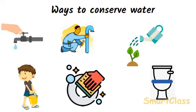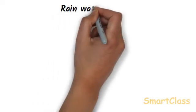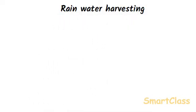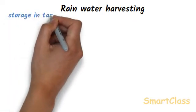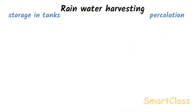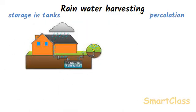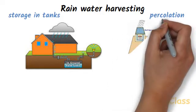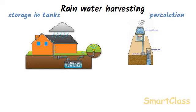Now let us see how we can overcome water shortage through rainwater harvesting. The activity of collecting rainwater directly and storing it in big tanks for later use, or making rainwater percolate into the ground more efficiently to recharge the groundwater, is called rainwater harvesting. There are two main techniques: collection and storage of rainwater in tanks for future use, and making rainwater percolate into the ground more efficiently by constructing percolating pits and recharge wells to replenish the groundwater.